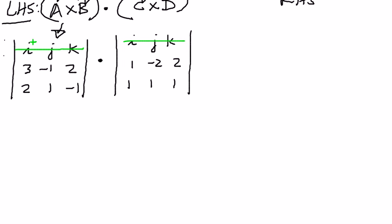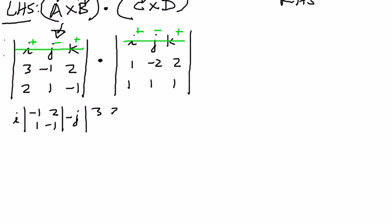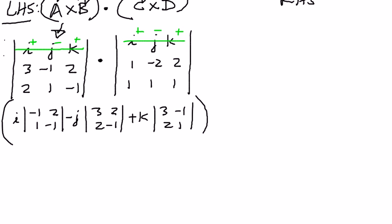The sign convention is going to be positive, negative, positive for both determinants. When we expand, for a cross b: i times the minor of negative 1, 2, 1, negative 1; then minus j times the minor of 3, 2, 2, negative 1; then plus k times the minor of 3, negative 1, 2, 1. We're going to take all of this and dot product it by the expansion of c cross d.